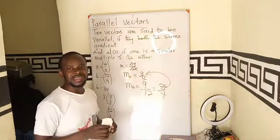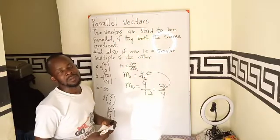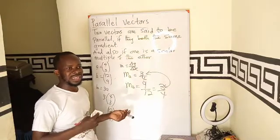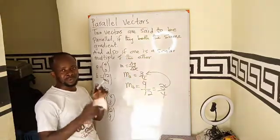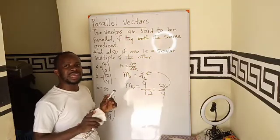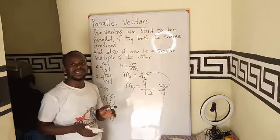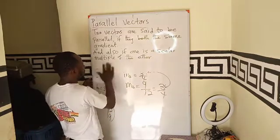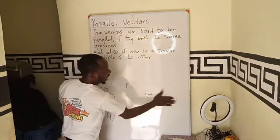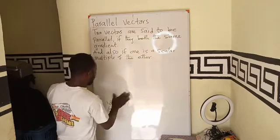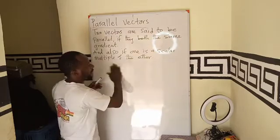For parallel vectors, one is a scalar multiple of the other. And another property is that when the scalar multiple is positive, it means the two vectors are moving in the same direction. But when the scalar multiple is negative, then we can say that the two vectors are in the opposite direction.